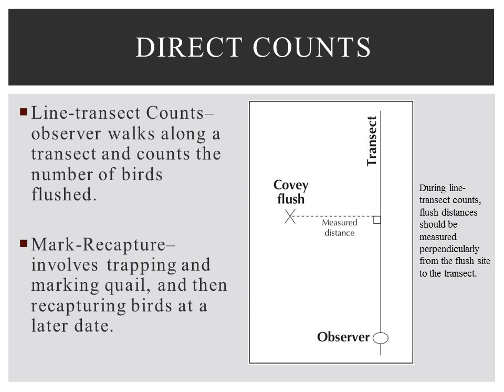Line transect counts. Line transect counts are a labor-intensive method of estimating quail abundance, but they may yield the most accurate results. An observer walks along a straight line or transect and counts the number of birds flushed.